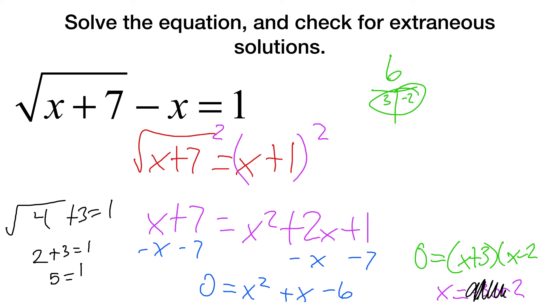Now let's put in 2. Square root of 2 plus 7 is 9, minus 2 equals 1. That's 3 minus 2 is 1. 1 is 1. So x equals 2, confirmed.